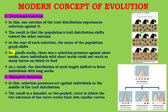Number two is directional selection. In this type, one extreme of the trait distribution experiences selection against it, and as a result the population's trait distribution shifts toward the other extreme — the mean of the population graph shifts. For example, the giraffe's neck: there was a selection pressure against short necks since individuals with short necks could not reach as many leaves. As a result, the distribution of neck length shifted to favor individuals with long necks.